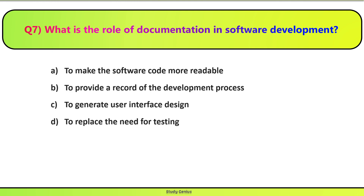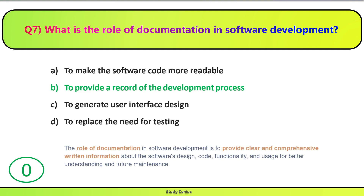Question 7. What is the role of documentation in software development? Documentation ka kya rol hai software development mein? Correct answer is B. To provide a record of the development process. The role of documentation is to provide clear and comprehensive written information about the software's design, code, functionality, and usage for better understanding and future maintenance.